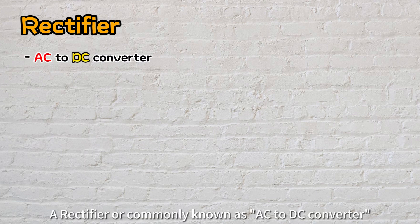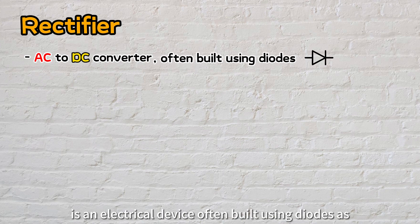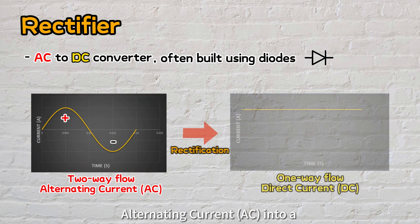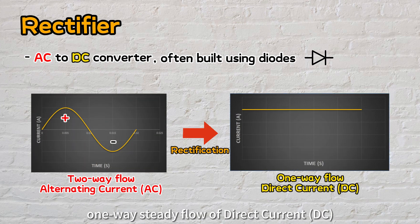A rectifier, or commonly known as AC to DC converter, is an electrical device often built using diodes as primary components. It functions to convert the two-way flow alternating current into a one-way steady flow of direct current.